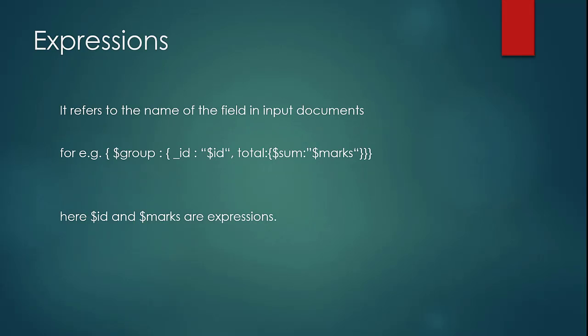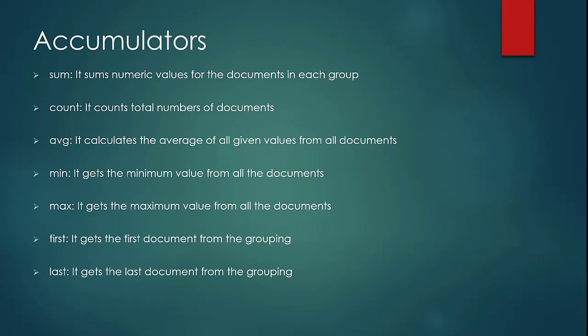Expressions, as we discussed, are different fields which can be used as part of input at a particular stage, annotated with a dollar sign — they refer to a field in the input document. Accumulators are different operations you could perform on the data. In our example, we did sum, but you could also do count, average, min, max, first, or last. There are different operations you can perform using accumulators.